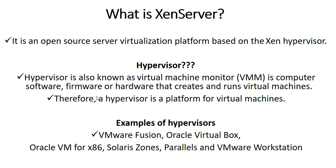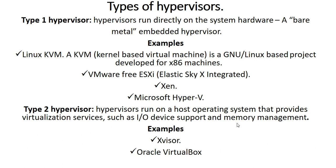Type 1 hypervisors run directly on the system hardware. When you buy a hardware computer, you install the Type 1 hypervisor directly, which then allows virtual machines to run on top of it. So a Type 1 hypervisor is more like a hardware operating system.